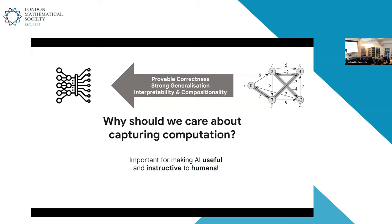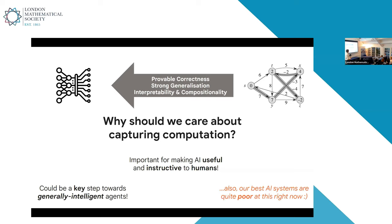I also argue these properties are very important if you want to make AI useful and instructive to humans. I would not want a machine learning system to teach me about any concept if it doesn't truly understand the concept. If it's just hacking the distribution and the quality of the answer depends on the quality of the question I ask it, that is not something I want teaching me about an area I have no idea about. If you need to spoon-feed the answer to the system for it to give you the answer, that's not something you can reliably use. And arguably, these are the main properties missing from state-of-the-art machine learning systems today, so if you get this one right, it can be a key step towards building generally intelligent agents.